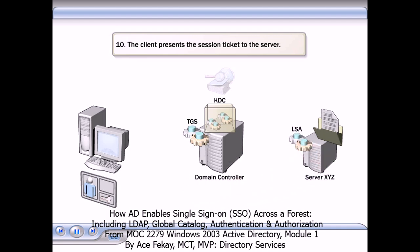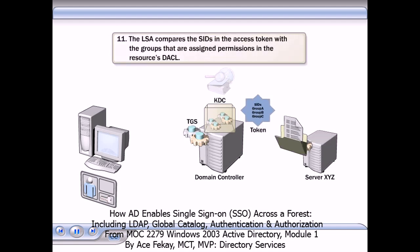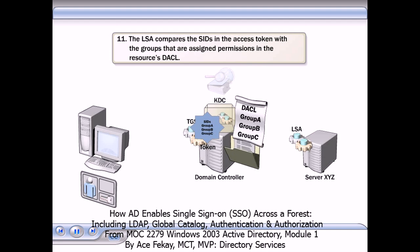The client presents the session ticket to the server. The LSA, or Local Security Authority, on the server uses the information in the session ticket to create an access token. The LSA compares the SIDs in the access token with the groups that are assigned permissions in the resource's DACL, or Discretionary Access Control List. If they match, the user is granted access to the resource.